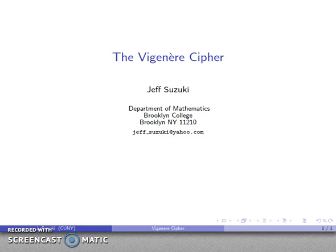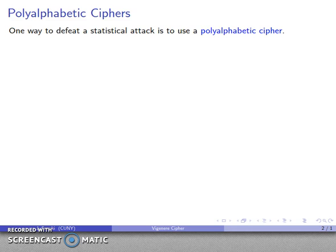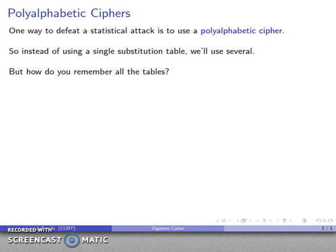An improved version of the single substitution cipher emerged from the politics of the 16th century and is known as the Vigenère Cipher. The basic idea is that a statistical attack can be used against a single substitution cipher, and one way we can defeat it is to use a polyalphabetic cipher where one letter is encrypted using many different letters. The problem is we need some regular way of shifting which cipher we're using and remembering which table we're using.